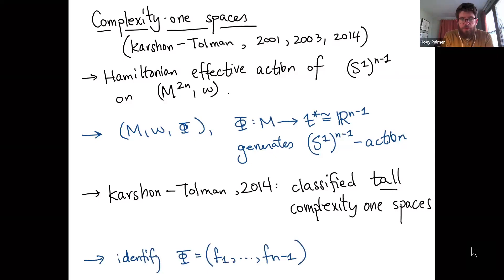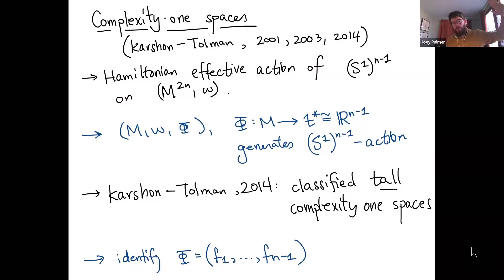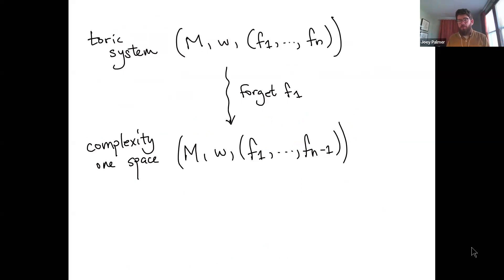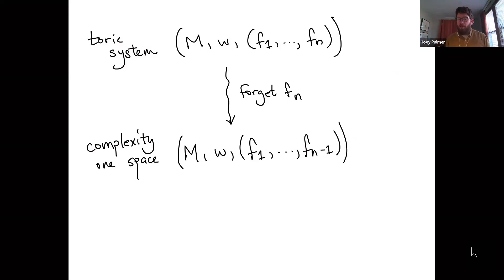The two main things I've introduced are: toric integrable systems, where n functions generate a torus action together; and complexity one spaces, where n−1 functions generate a torus action. Starting with a toric system, you can certainly obtain a complexity one space by just forgetting one of the functions. If this theory is interesting, that should not be a way to get all examples of complexity one spaces — there should be new things.